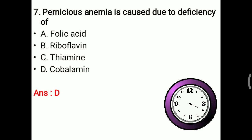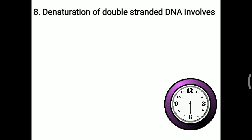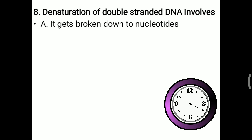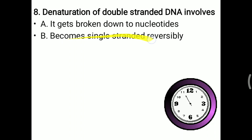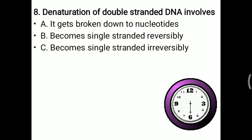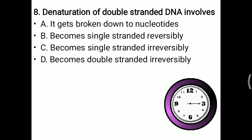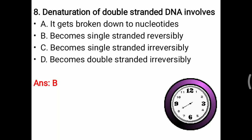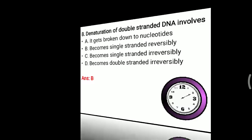Next MCQ: denaturation of double-stranded DNA. Options: it breaks down to nucleotides (no — denaturation does not break it down to the nucleotide level), becomes single-stranded reversibly (yes — it becomes single-stranded and is reversible; when the denaturing factor is removed, annealing is possible), becomes single-stranded irreversibly (no — it is reversible), or becomes double-stranded irreversibly (no). After denaturation, double-stranded DNA becomes single-stranded reversibly. The right answer is B.